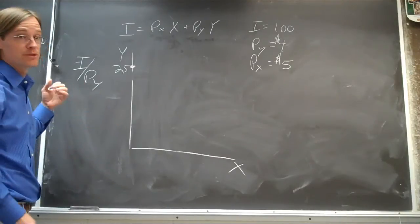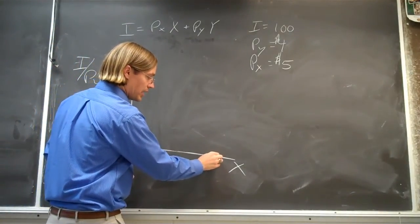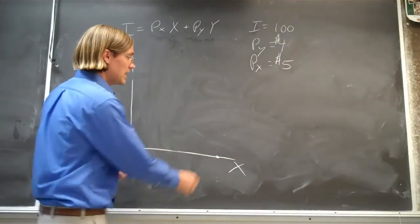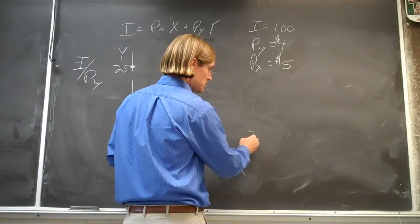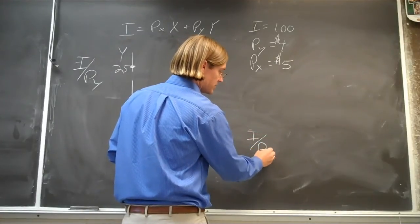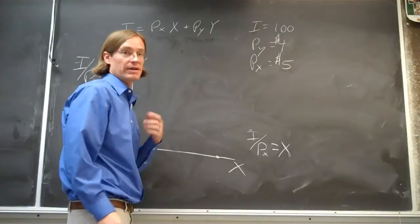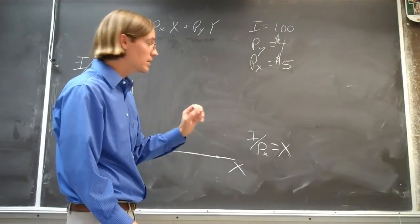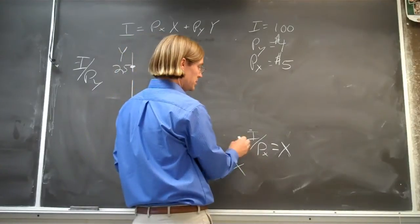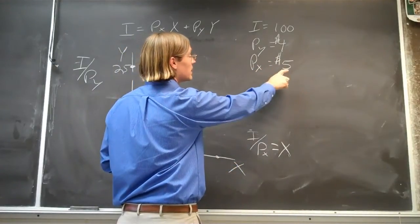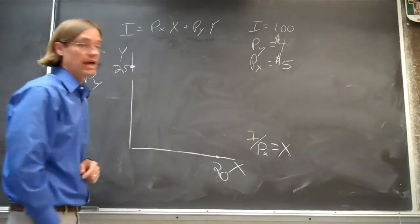Same thing with good X. If we spend all of our money on good X, we're going to be able to buy a big pile of X. It's going to be income divided by the price of good X, giving you the number of units of X you can buy if you spend all your money on that one item. In this case, that's a hundred divided by five, so you can buy twenty units of good X.